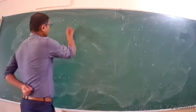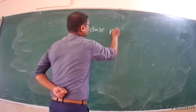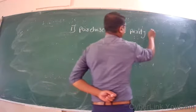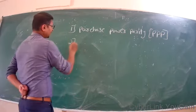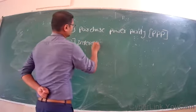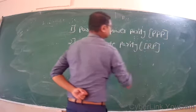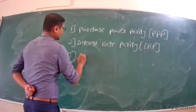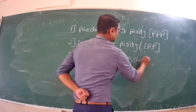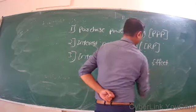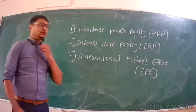We have three foreign exchange theories. The first is called Purchase Power Parity, popularly known as PPP theory. The second theory we are going to discuss is Interest Rate Parity, that is IRP. And the third is International Fisher's Effect, also called IFE.